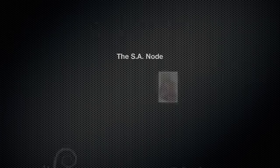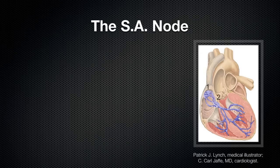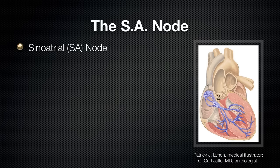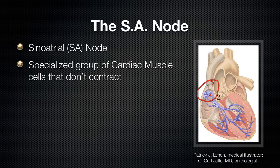Let's first talk about the SA node. The SA node stands for the sinoatrial node and you can see it in this figure over here. It is this cluster of cells and it is basically a specialized group of cardiac muscle cells that don't contract.